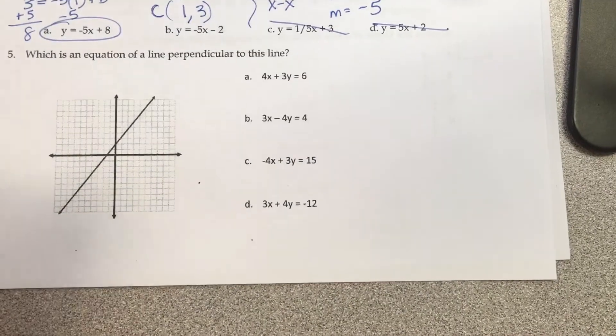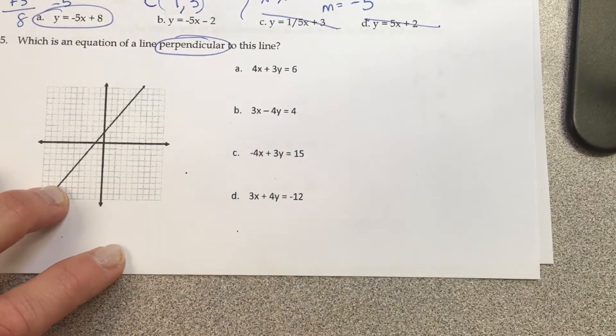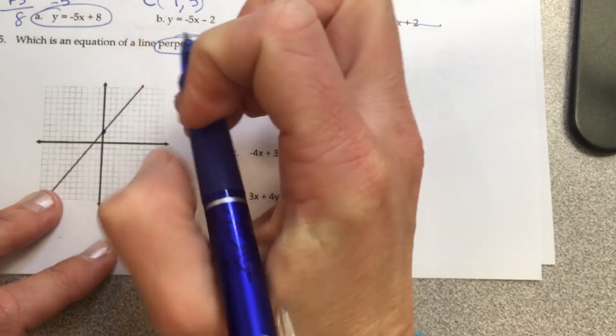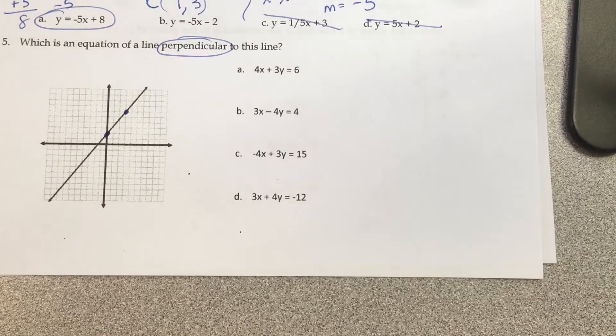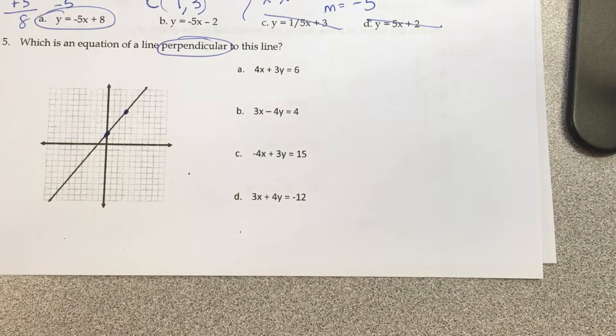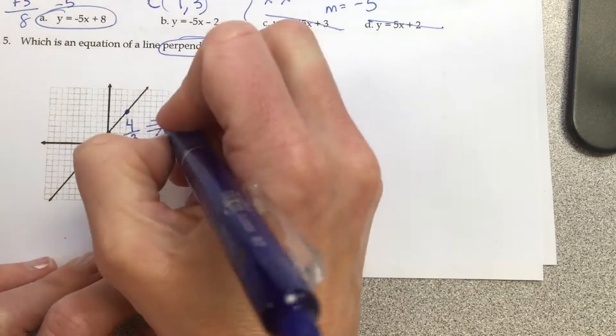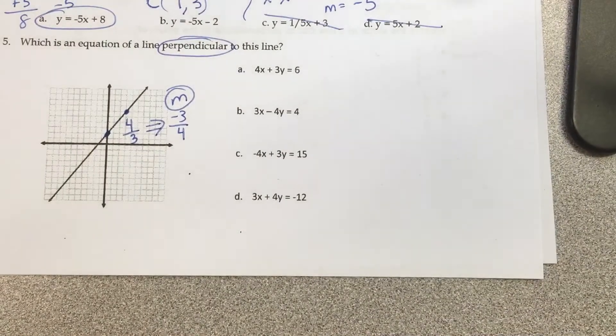Number 5 - which is the equation of the line perpendicular? Perpendicular means to flip and change the slope. So you pick two points and do rise over run. This one goes up 4 over 3. Very good. Then I have to flip and change it - 4 over 3 becomes negative 3 over 4. And that is my m, that's my slope, negative 3 over 4.